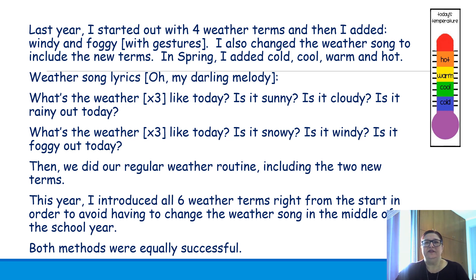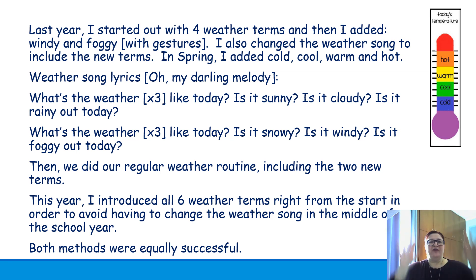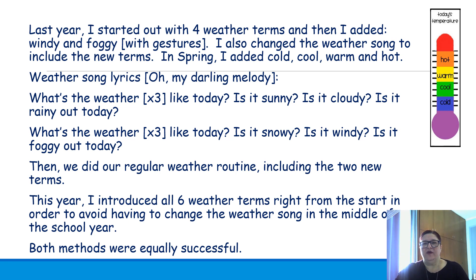Last year I started with four weather terms and then added windy and foggy, because students asked their Greek kindergarten teachers what those terms were in English. We introduced them about a month after the first introduction. In spring I added cold, cool, warm, and hot. The weather song was updated to include: 'What's the weather? What's the weather? What's the weather like today? Is it sunny? Is it cloudy? Is it rainy out today? Is it snowy? Is it windy? Is it foggy out today?' This year I introduced all six weather terms from the start to avoid changing the song mid-year, and both methods were equally successful.